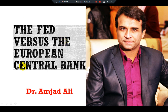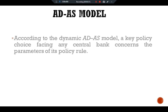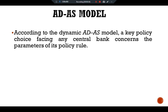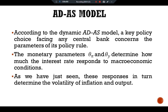According to the dynamic aggregate demand and aggregate supply model, a key policy choice facing any central bank concerns the parameters of its policy rule. The monetary policy parameters are theta_pi and theta_y. Theta_pi represents the responsiveness of the target interest rate to inflation, and theta_y represents the responsiveness of the target interest rate to output. These two parameters determine how much the interest rate responds to macroeconomic conditions, and in turn determine the volatility of inflation and output.